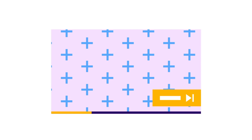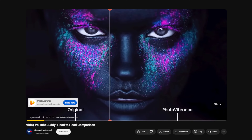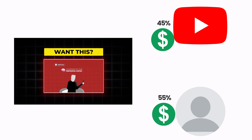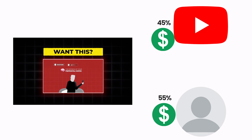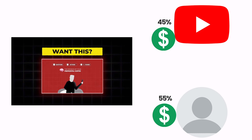In long-form videos, ads play directly on your content. The revenue is split with YouTube keeping 45% and you getting 55%. It's pretty straightforward, but YouTube shorts are a little bit more complicated.